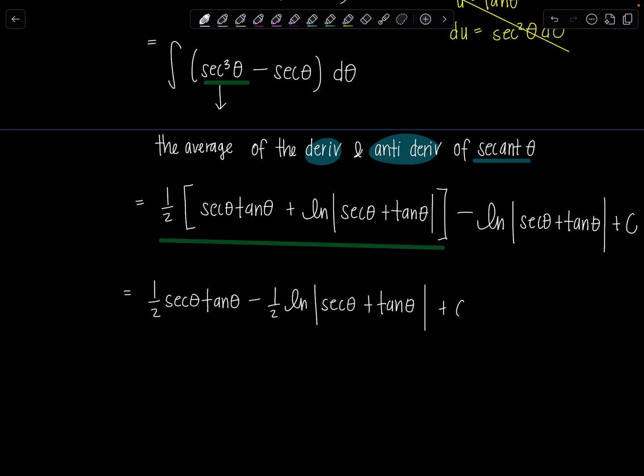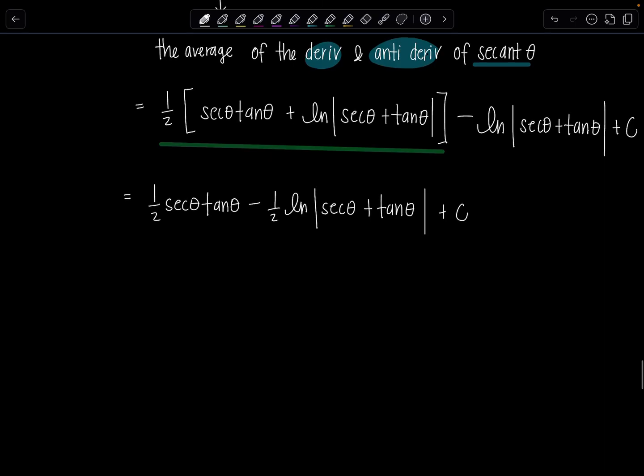And then no, don't box this answer. I know it's beautiful. We're so, so proud, but actually it's triangle time. We've got to go back to our original variable, which is X. So how do we do that? Well, think back, what was our original substitution? We let X plus one equals secant theta.